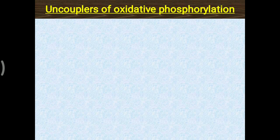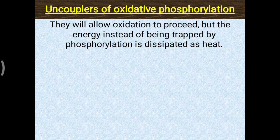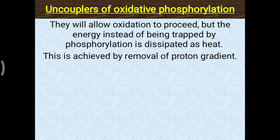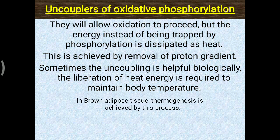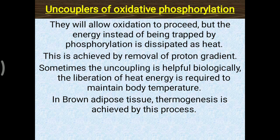Uncouplers of oxidative phosphorylation allow oxidation to proceed, but instead of energy being trapped by phosphorylation, it is dissipated as heat. This is achieved by removal of the proton gradient. Biologically, uncoupling is advantageous for thermogenesis — for example, in brown adipose tissue, heat generation is achieved by uncoupling, which is particularly important in young children for maintaining body temperature.